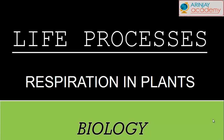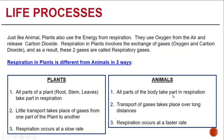Let's take a look at how respiration takes place in plants. Just like animals, plants also use energy from respiration. They use the oxygen from the air and they release carbon dioxide. Respiration in plants involves the exchange of gases like oxygen and carbon dioxide, and as a result, these two gases are called respiratory gases.